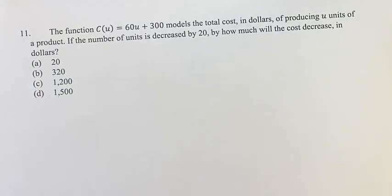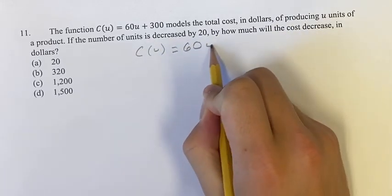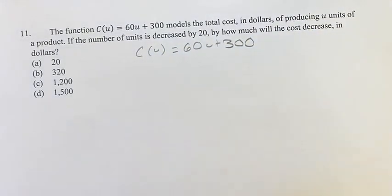Hello and welcome back to another video. This problem has the function C(u) = 60u + 300. This is modeling the cost of producing u units of a certain product.